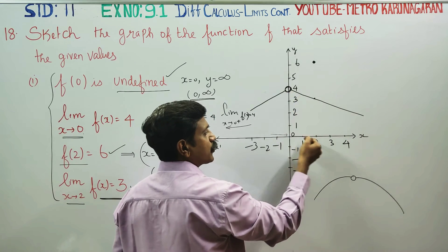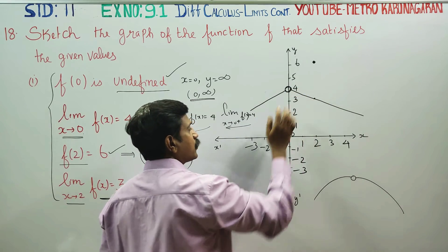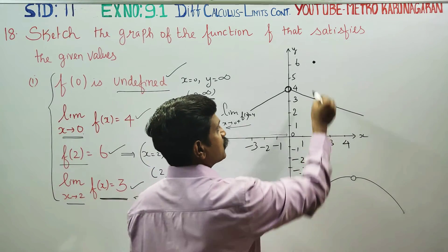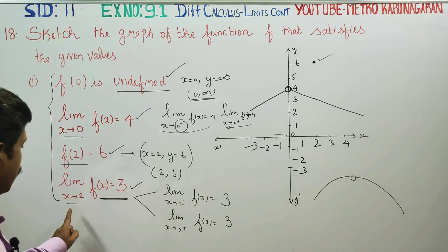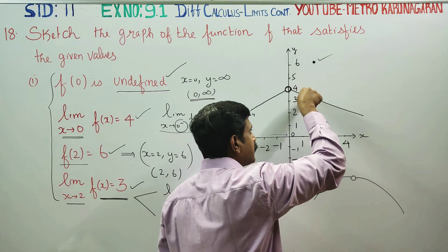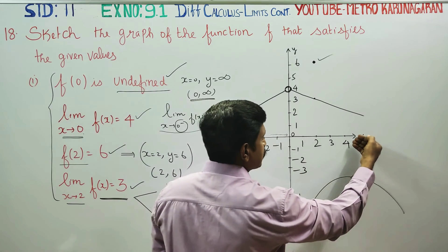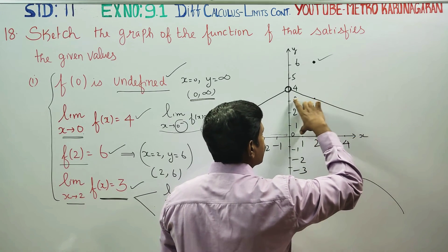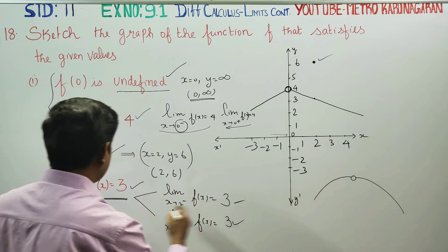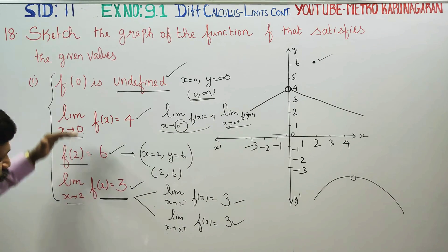If I travel through 0, the value 4 can be reached. So from both left and right directions, 4 can be reached on the graph. For this condition: f(2) is equal to 6 — this is the exact value. The limit as x approaches 2 from the left is 3, and from the right direction also gives 3. This is a typical graph satisfying all 4 conditions.